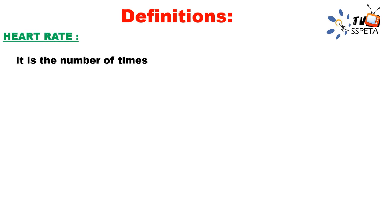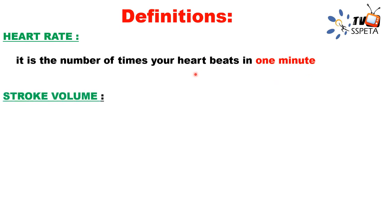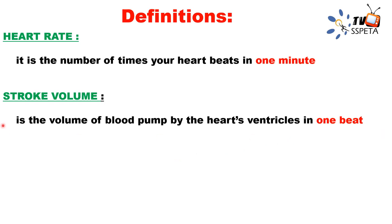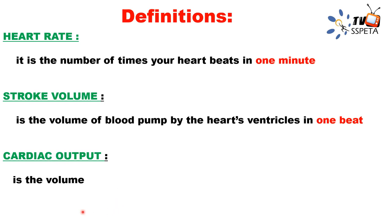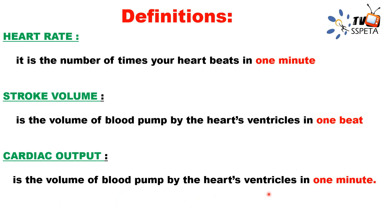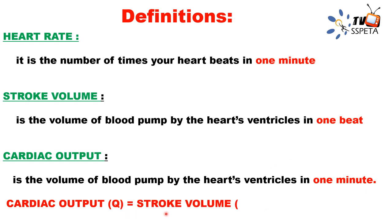Now some key definitions. Heart rate is the number of times your heart beats in one minute. Stroke volume is the volume of blood pumped by the heart's ventricle in one beat. Cardiac output is the volume of blood pumped by the heart's ventricle in one minute. Cardiac output (Q) equals stroke volume (SV) multiplied by heart rate (HR).